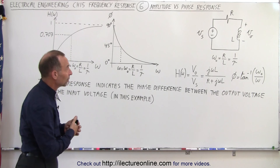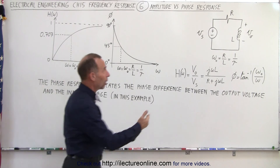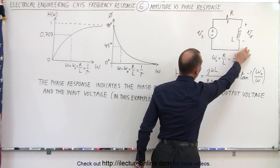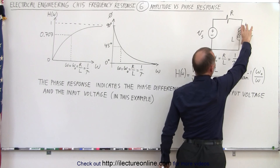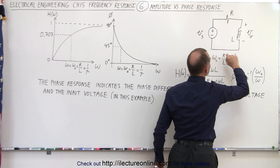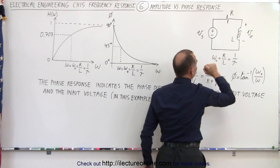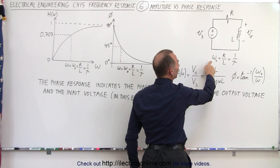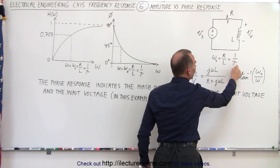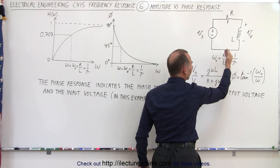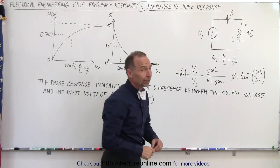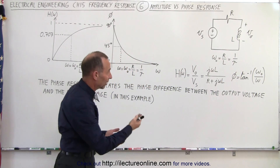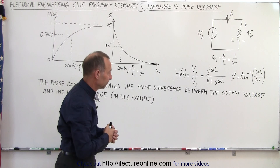Here we have a simple RL circuit. We have a voltage source and a voltage output across the inductor and the resistor. Omega sub-naught is the inverse of the time constant, so in this case it'll be R over L, because the time constant is L over R.